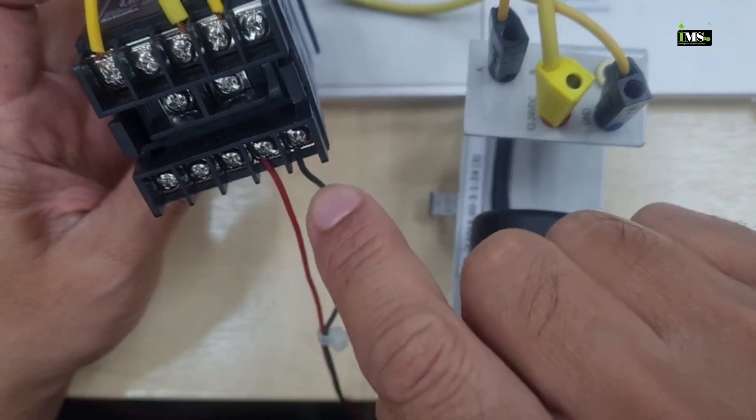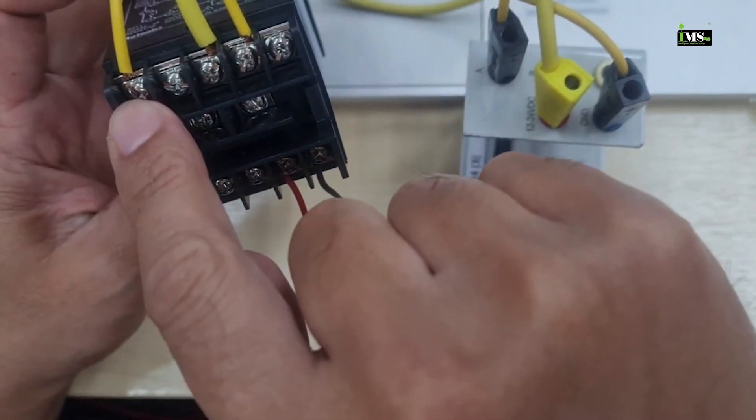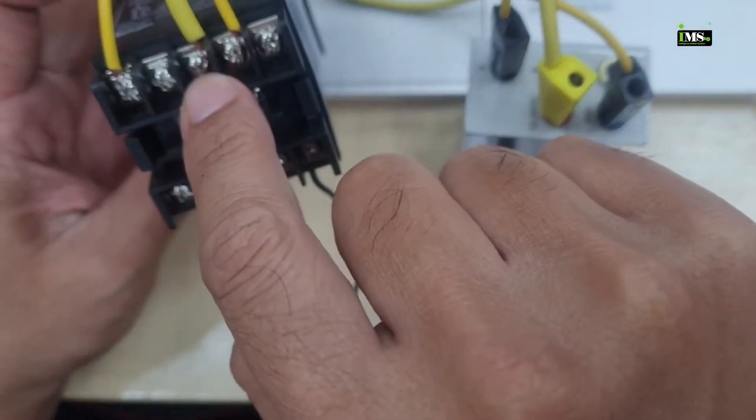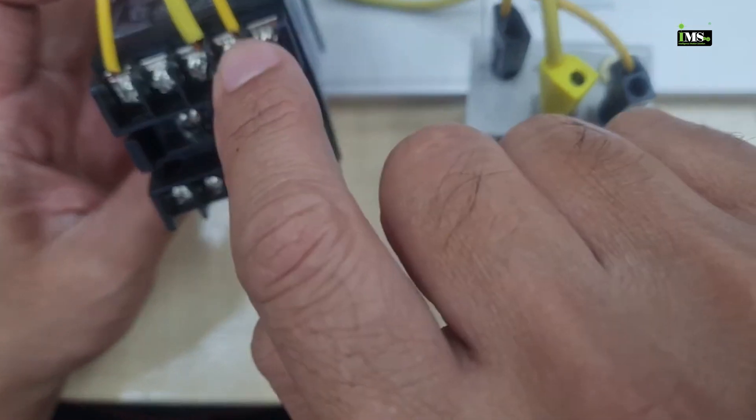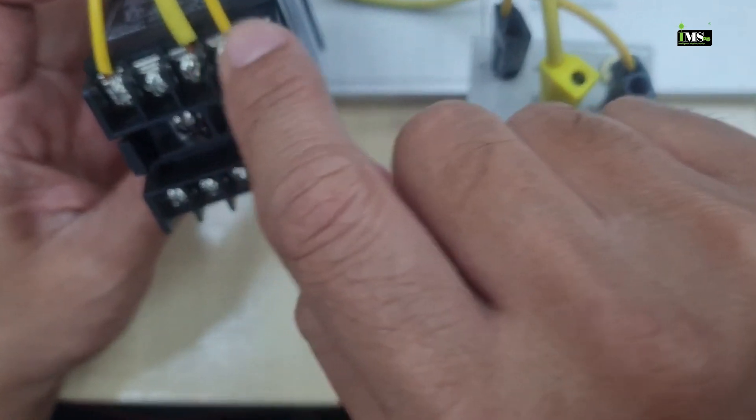Source supply is 240 AC volt. Input terminal number six, six is 12 volt, number eight and ground number nine.